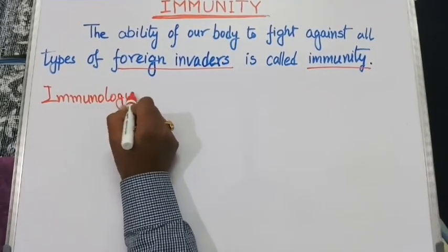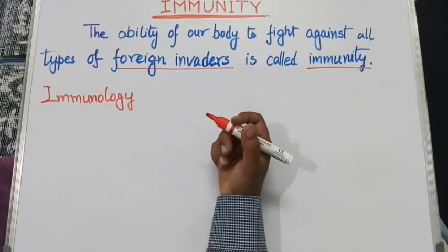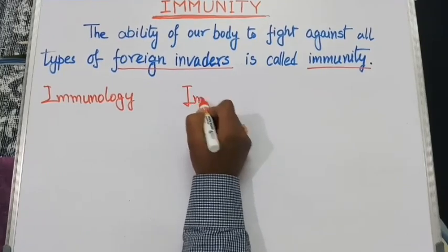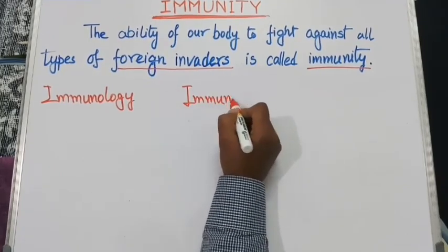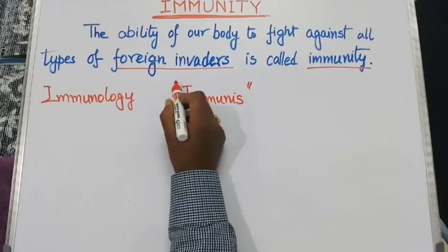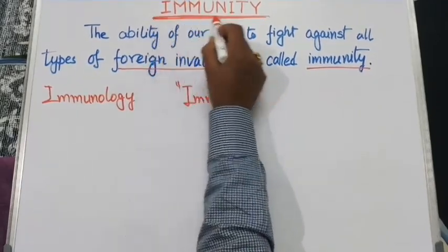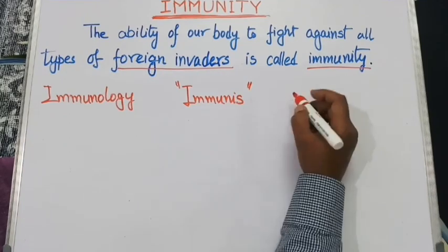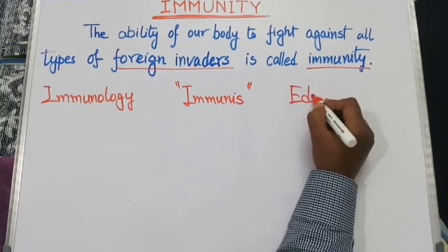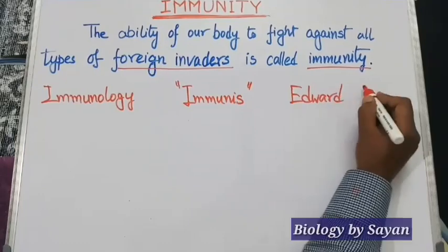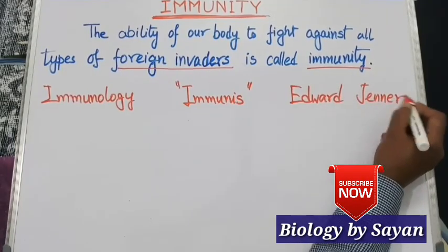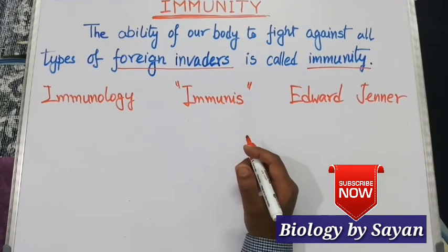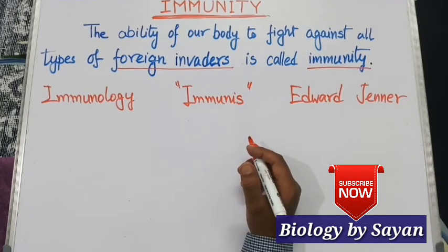Immunology is the branch of biology that actually deals with our immune system. The term immunity is derived from the Latin word 'immunis'. Scientist Edward Jenner, who discovered the vaccine for smallpox for the first time, is considered the father of immunology.